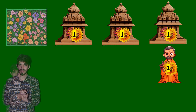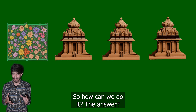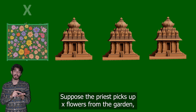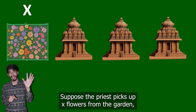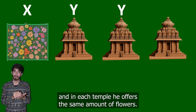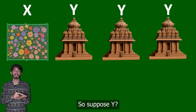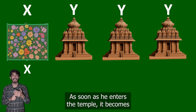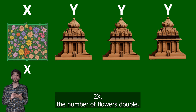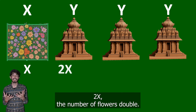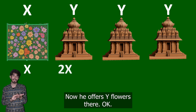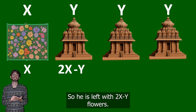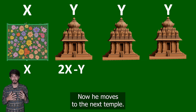The answer is simple maths. Suppose the priest picks x flowers from the garden and in each temple he offers y flowers. As soon as he enters the first temple it becomes 2x. He offers y flowers, so he is left with 2x minus y flowers.